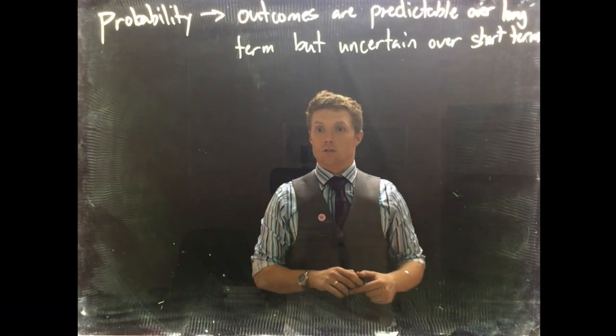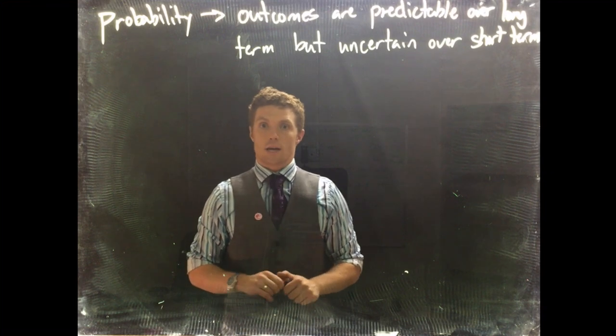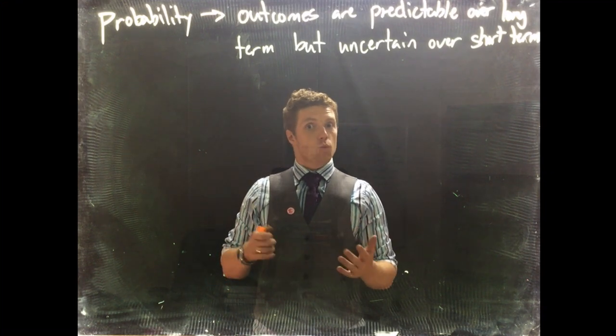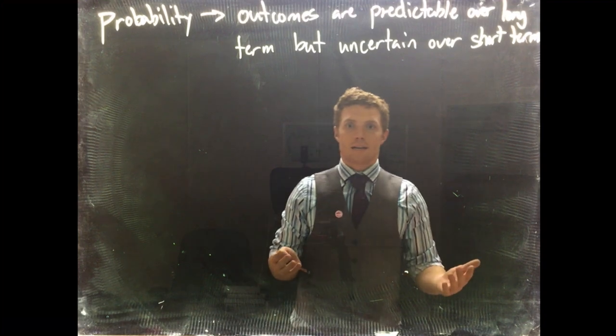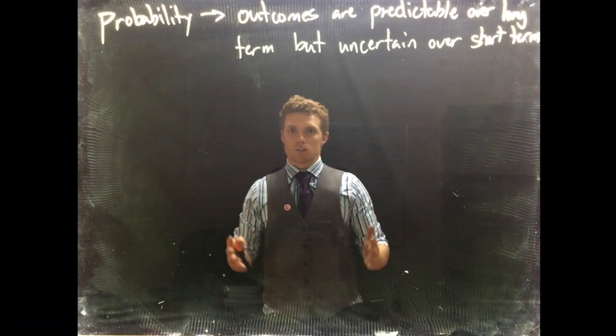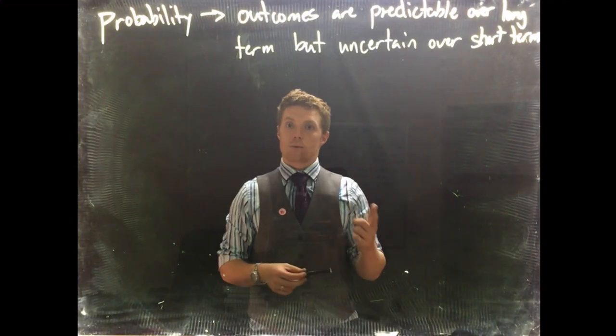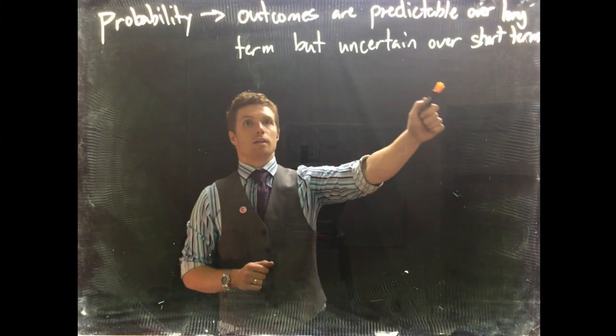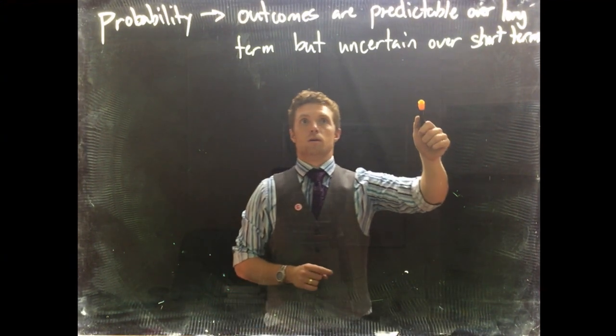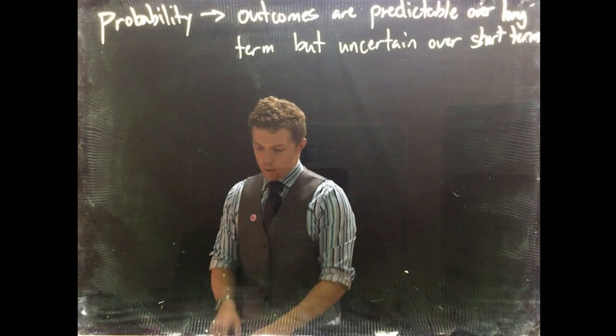So if you flip a coin a hundred times and it lands heads a hundred times, that is weird. But if you were to flip a coin a billion times, you would have runs that long just because it randomly happens. So we have to remember that outcomes are predictable over the long term but uncertain over the short term.